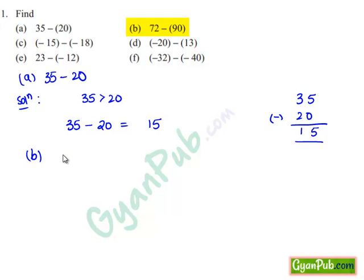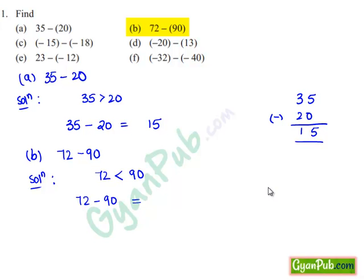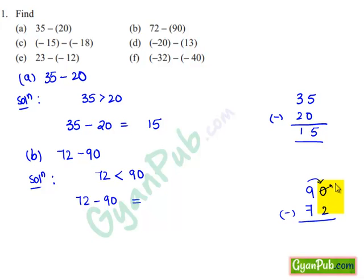Taking down part b, 72-90: we observe that 72 is less than 90, so we cannot apply general subtraction. We cannot subtract a bigger integer from a smaller integer; we are subtracting smaller integer 72 from bigger integer 90. Since 0 is less than 2, we take a borrow of 10 from 9, it becomes 10 and the 9 becomes 8. 10-2 is 8, 8-7 is 1, so we get 18.